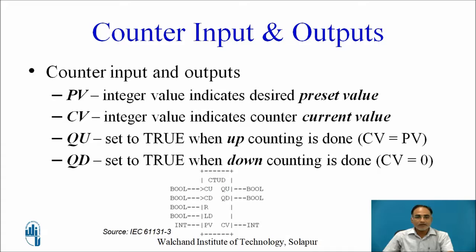PV is an integer value indicating the desired preset value. CV is another integer value indicating the counter's current value. Q is the output of the counter, set to true when up counting is done — that is when CV becomes equal to PV. QD is the output set to true when down counting is done — that is when CV becomes 0.